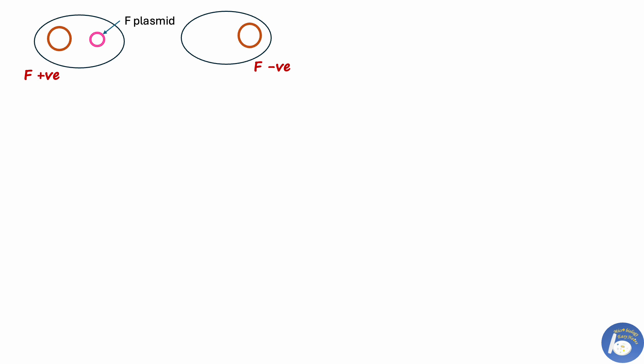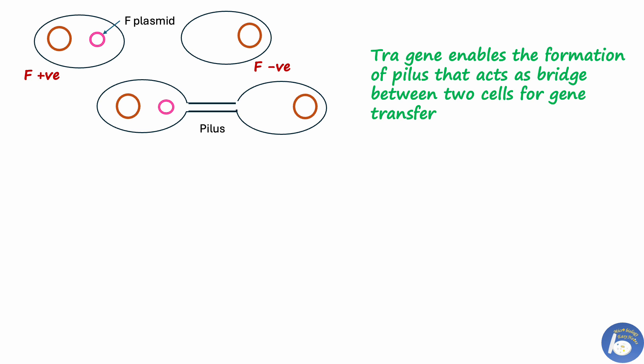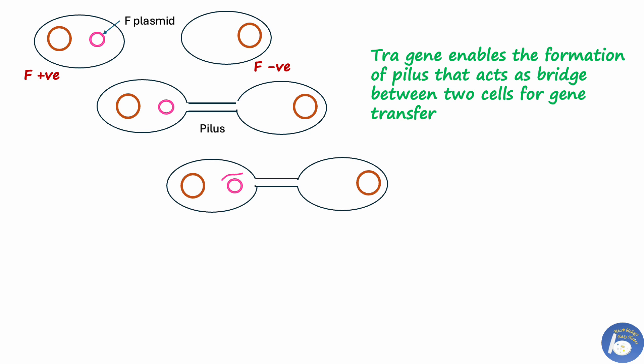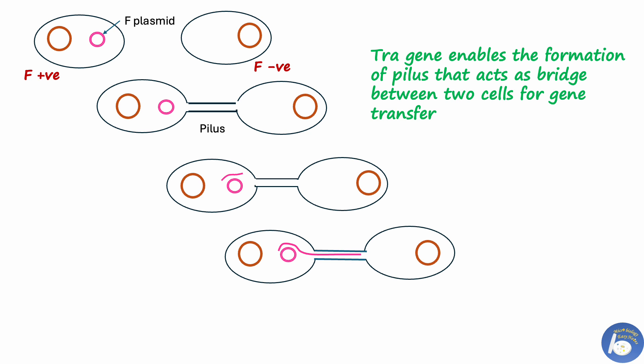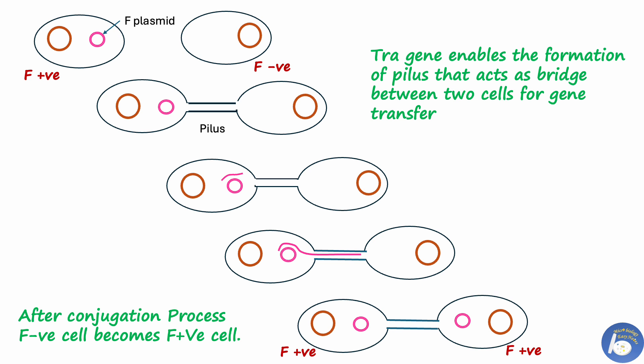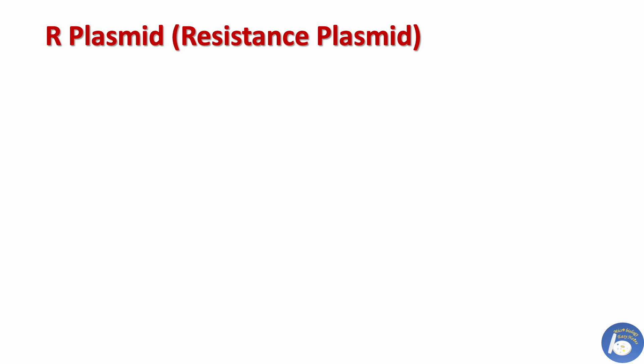In the process of conjugation, the tra gene enables the formation of a pilus that acts as a bridge between two cells for gene transfer. The F plasmid is nicked in one strand and this strand is transferred to the other cell. That is how F-positive bacteria conjugate with F-negative bacteria, resulting in two F-positive bacteria. It is important to note that there can only be one F plasmid in each bacterium.